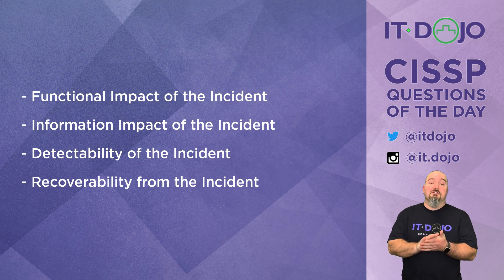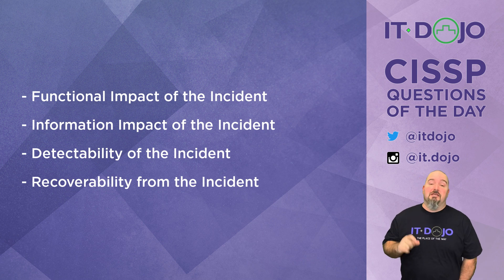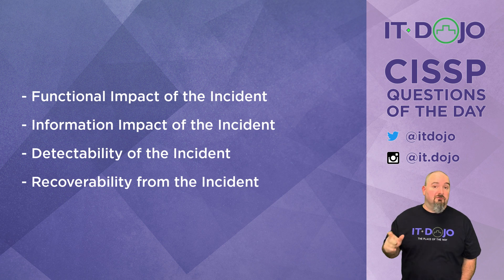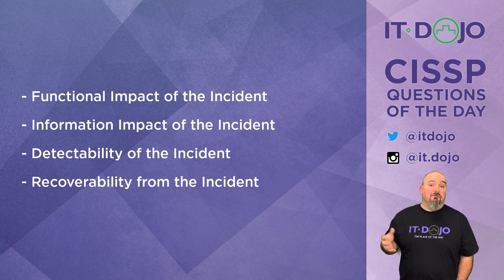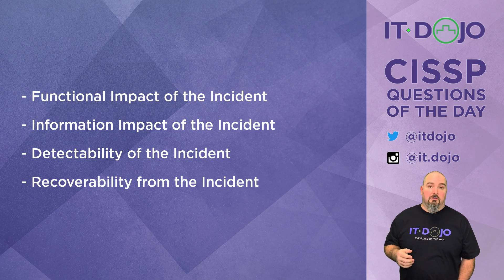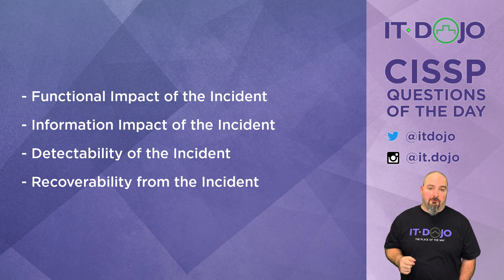The second option says you're going to look at the information impact. This is essentially asking: how does this pertain to confidentiality, integrity, and availability? Have you had a loss of PII? Have you had a breach of data integrity, or a breach of some proprietary data on your system? What is the impact of this particular incident on the CIA triad? That is also very much going to dictate how you prioritize responses.